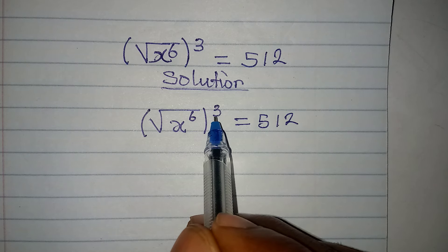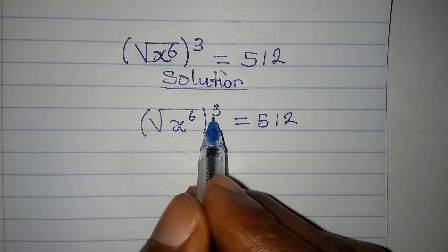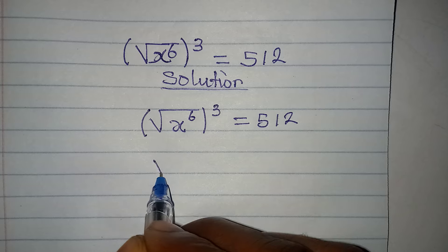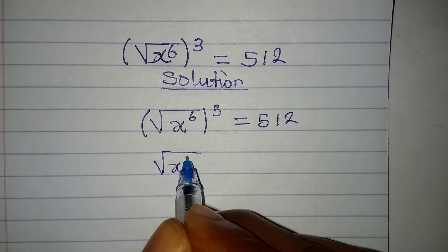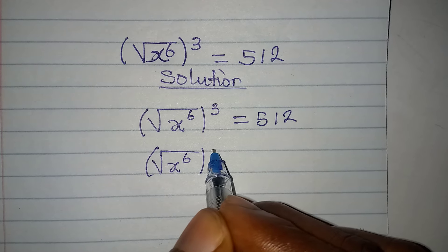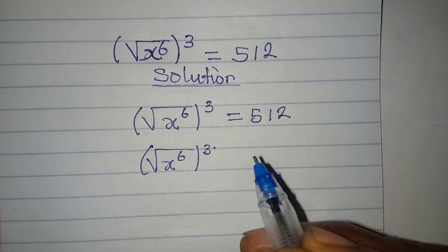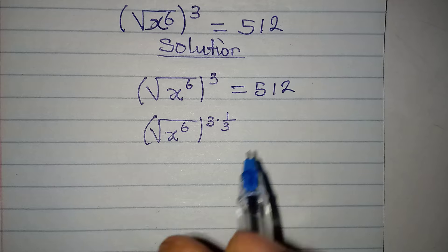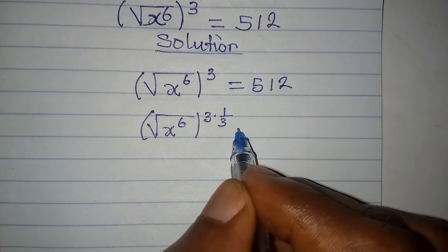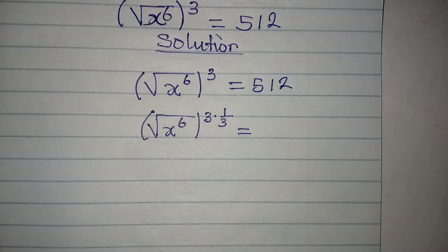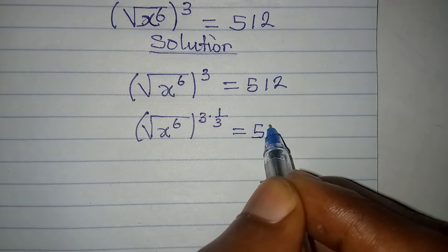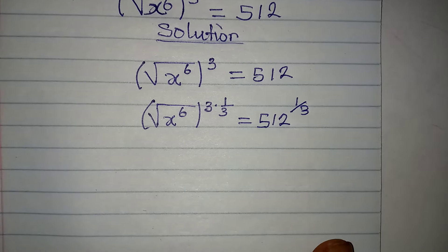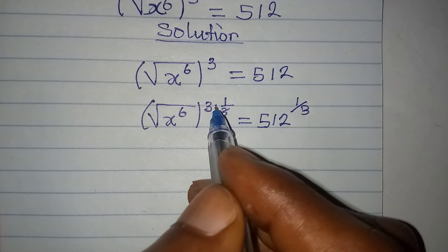The only way we remove that power of 3 is to multiply by its reciprocal. So we're going to have the square root of x to the power of 6, to the power of 3, multiplied by 1 over 3, which is the reciprocal of 3. And since I introduced this reciprocal, it has to reflect on the right-hand side, so this becomes 512 to the power of 1 over 3.